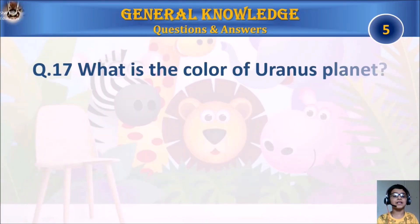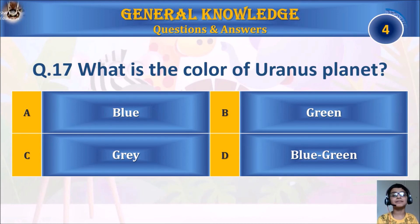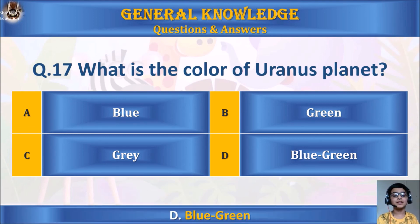Question 17: What is the color of Uranus? A. Blue, B. Green, C. Grey, or D. Blue-green. Your time starts. The answer is D. Blue-green.